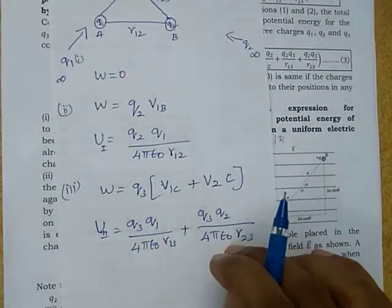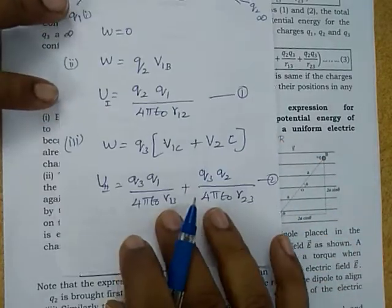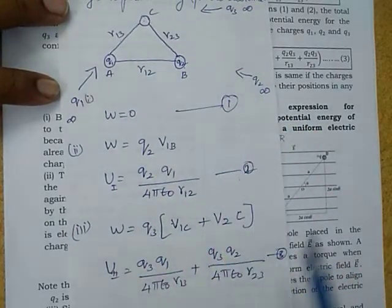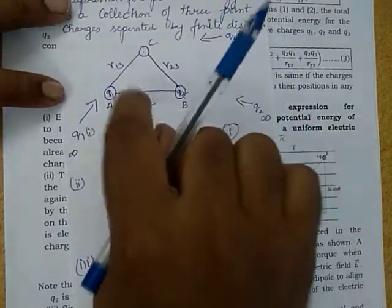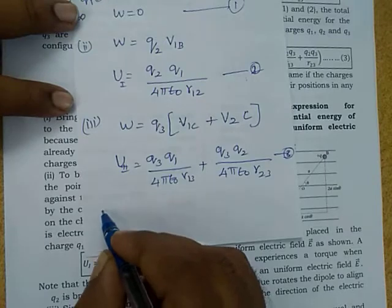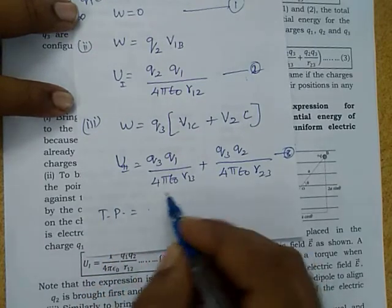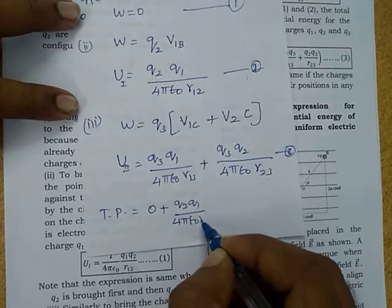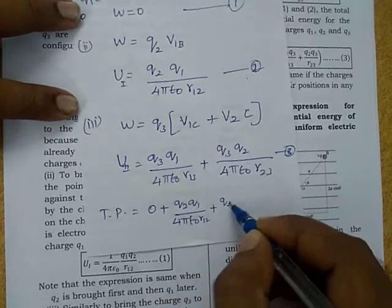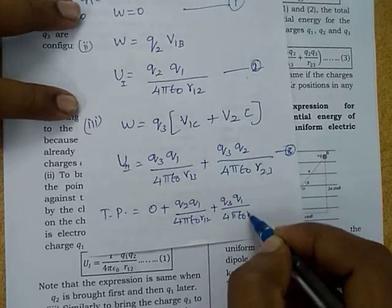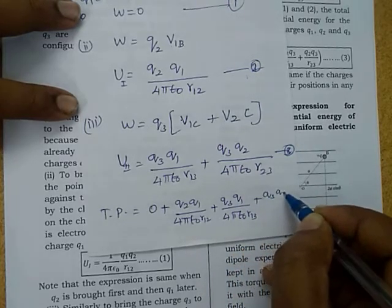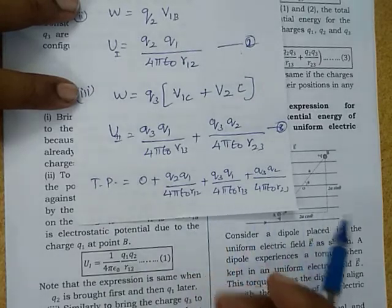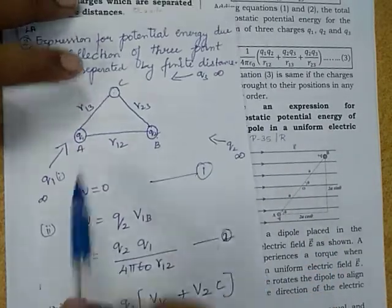Then adding equations 1, 2, and 3, we get the total potential energy of the system of 3 charges. That total potential energy is equal to 0 plus q2 q1 over 4π epsilon-0 r12, plus q3 q1 over 4π epsilon-0 r13, plus q3 q2 over 4π epsilon-0 r23. This is the total potential energy of the system of 3 charges separated by a finite distance.